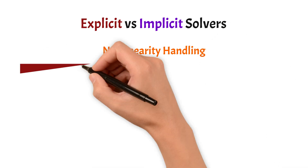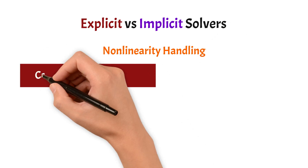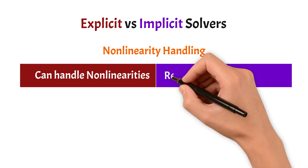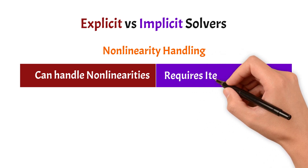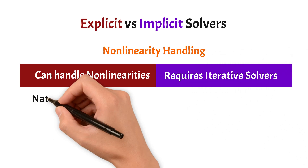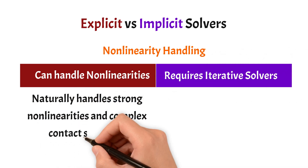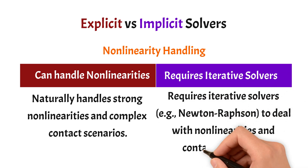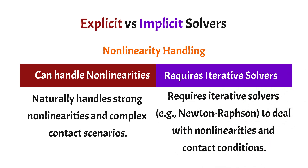In terms of handling nonlinearities in the problem, explicit solvers are much better at handling these nonlinearities. Implicit solvers require some advanced iterative solvers to handle them. If you have questions about what these nonlinearities are for a finite element problem, we will deal with that question in one of the upcoming videos.